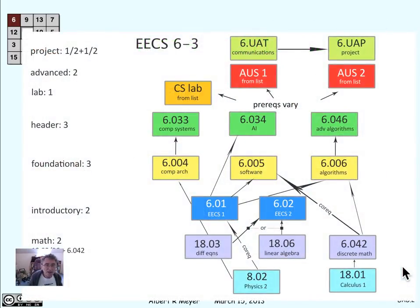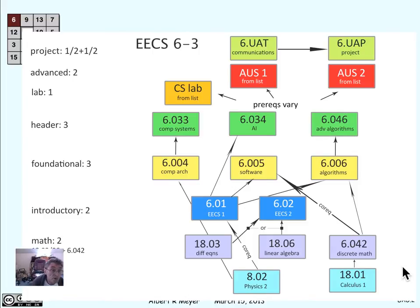Here's why they come up all the time. Let's look at a diagram that may be familiar to you. This shows the prerequisite structure of required courses in the 6-3 program of MIT, Electrical Engineering and Computer Science Department. There are similar charts for the other sub-majors of EECS and in other departments as well.